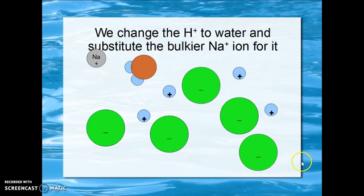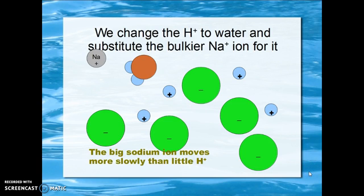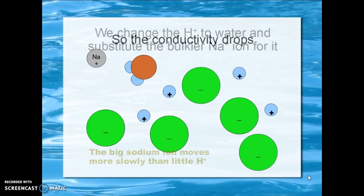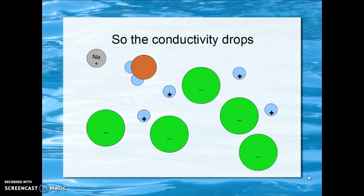You can look up the difference in molar mass between the two ions and see. The big sodium ion will move more slowly than the tiny hydrogen ion did. Therefore the conductivity drops.